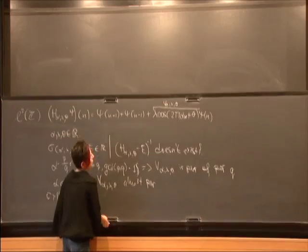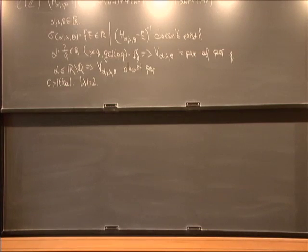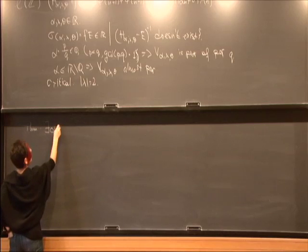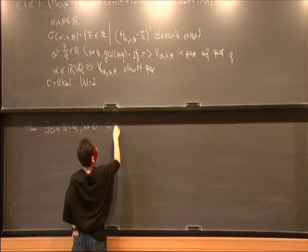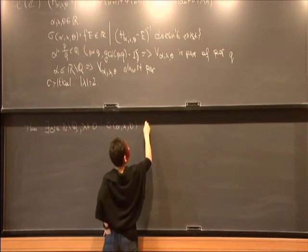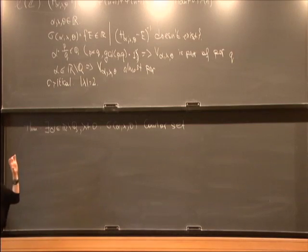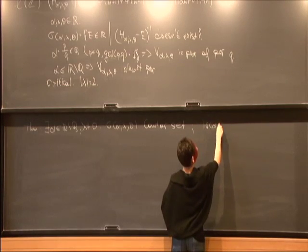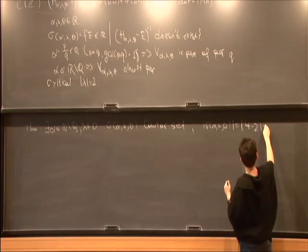Another important thing that we know today, which is the result of intensive work of numerous researchers, some of them are here, over the past 30 years, is the following elegant, not simple but elegant theorem: for any irrational α and λ different from 0, the spectrum is a Cantor set in the sense that this is a nowhere dense set with no isolated points of Lebesgue measure equal to |4 - 2|λ||.